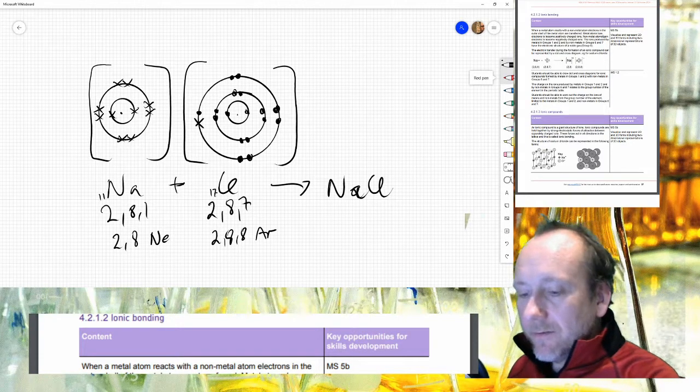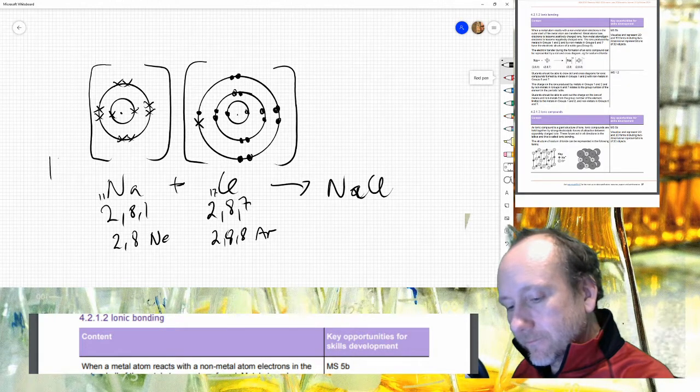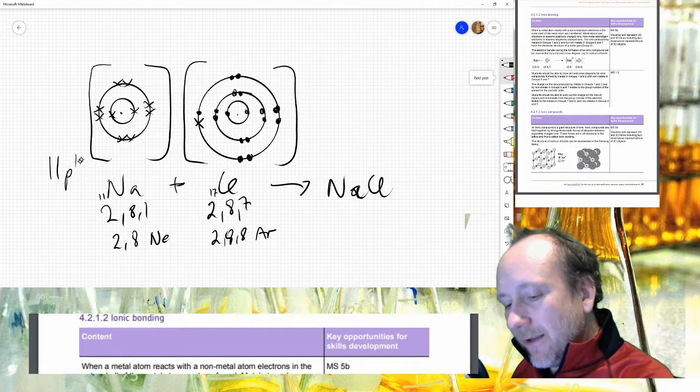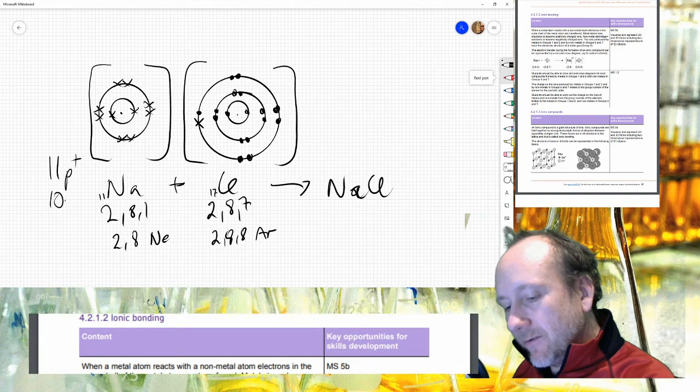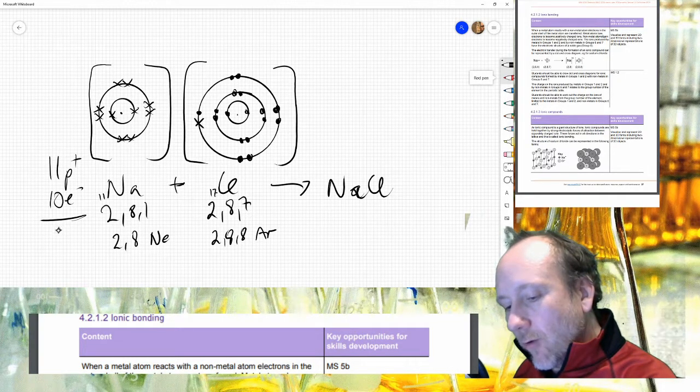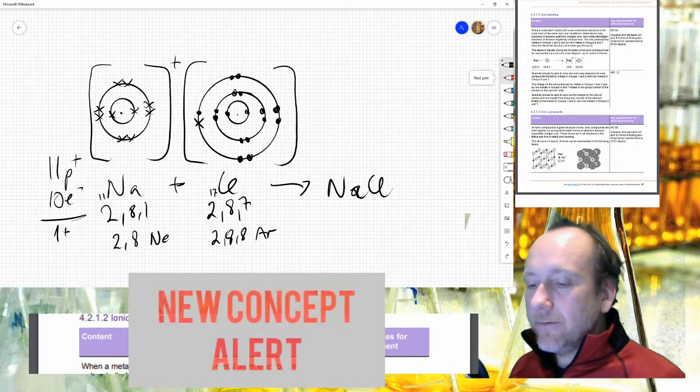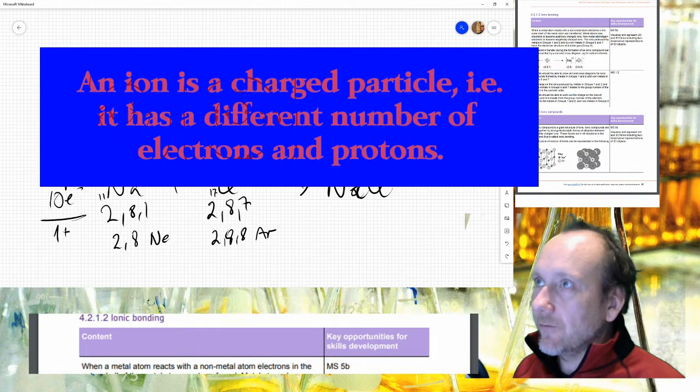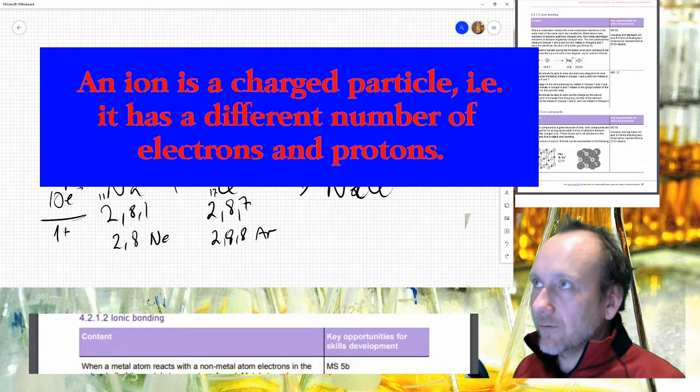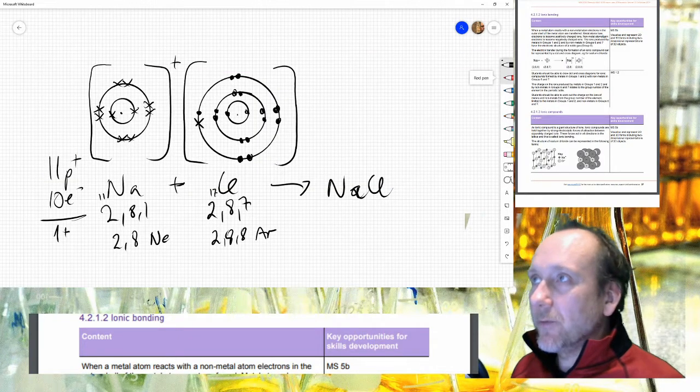Now, since sodium only has 10 electrons left, so it used to have 11, it still has 11 protons, but it now has 10 electrons. There's a shortage of one negative charge. So that means that this ion, which is just the definition of an atom with a different number of electrons to protons, a charged particle, this ion has a positive charge.